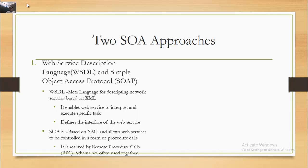Two SOA approaches are WSDL (Web Service Description Language) and SOAP (Simple Object Access Protocol). WSDL is a meta-language for describing network services based on XML — it enables web services to interpret and execute specific tasks and defines the interface of the web service. SOAP is also based on XML and allows web services to be controlled in the form of procedure calls, realized by remote procedure calls (RPC). These schemas are often used together.